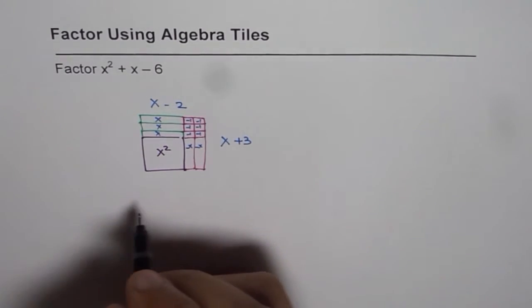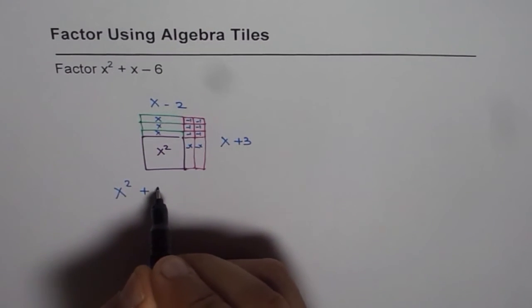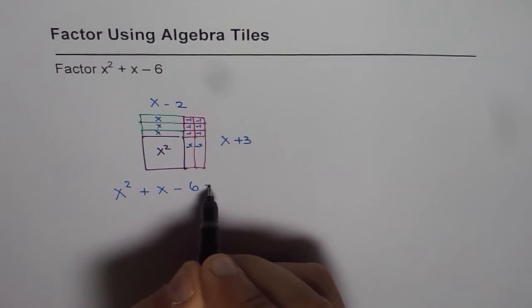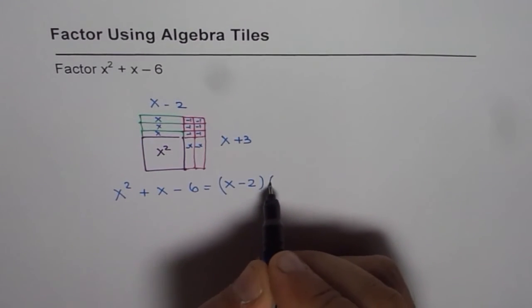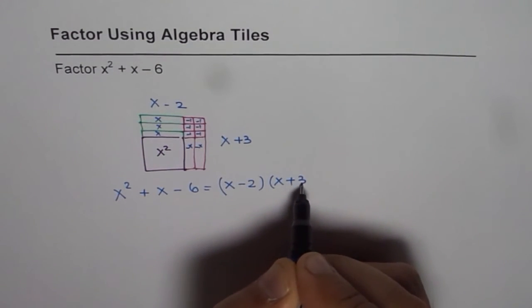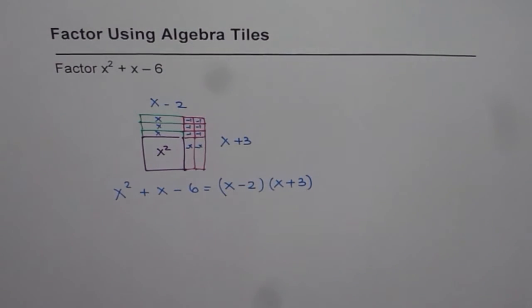The length of the rectangle is x minus 2. The width is x plus 3. And therefore x squared plus x minus 6 can be written as x minus 2 times x plus 3. So that is how we can factor trinomials using algebra tiles.